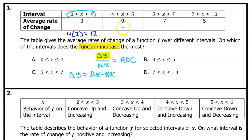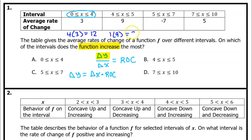Let's do the same for the next interval. It's going to be delta x times the rate of change. From 4 to 5, the width of this interval is 1. And we see the rate of change is 9. 1 times 9 is 9. That's the function increase for this interval — the change in y.